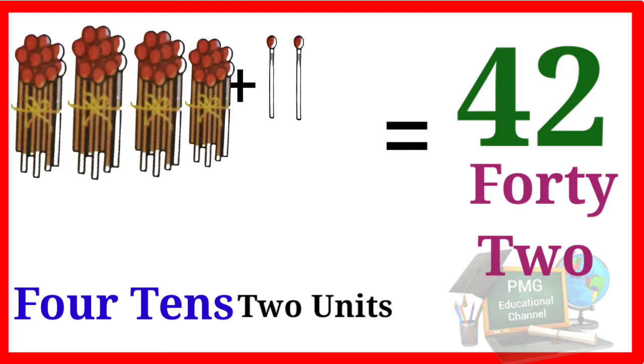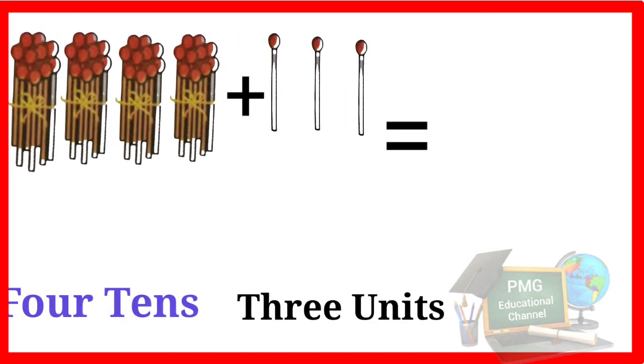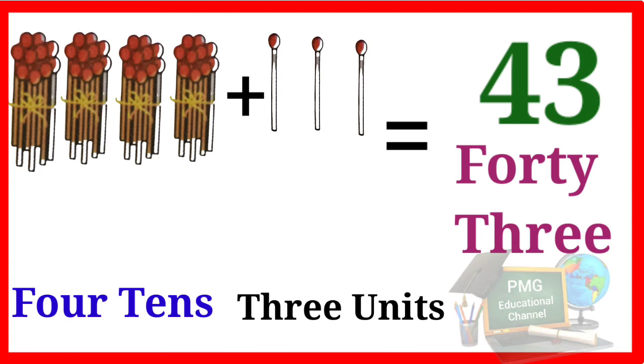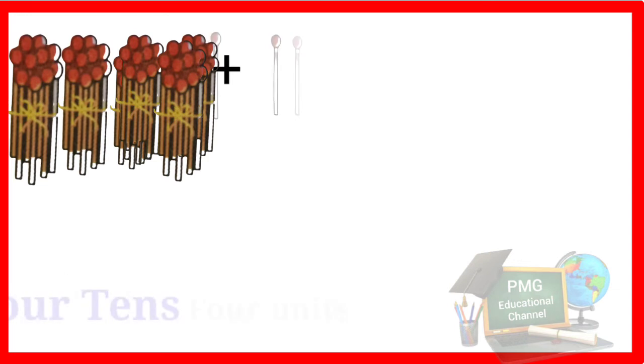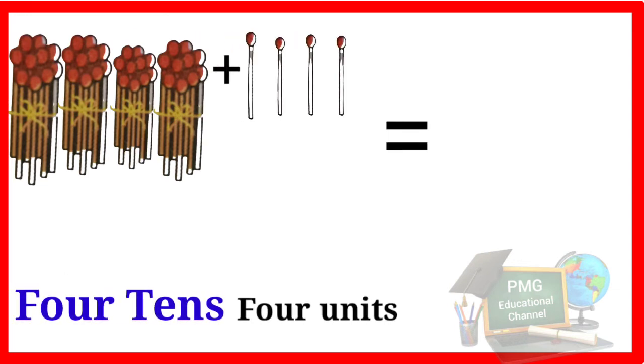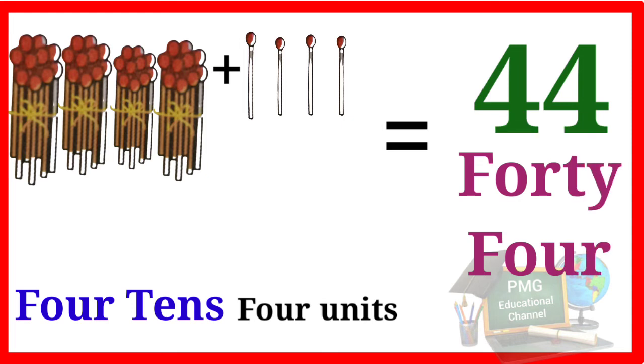Now look at this another number. Here is four tens three units, 43: F-O-R-T-Y T-H-R-E-E, 43. Now four tens four units, number becomes 44: F-O-R-T-Y F-O-U-R, 44.